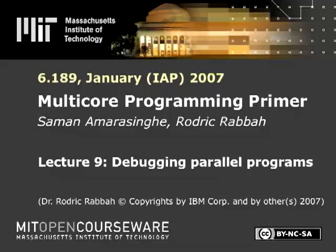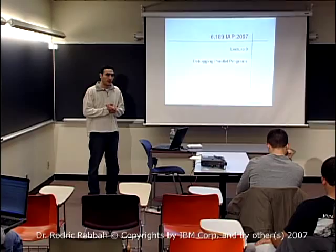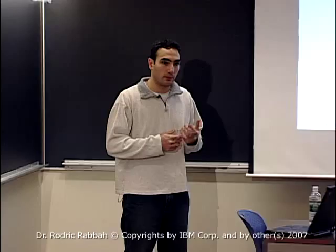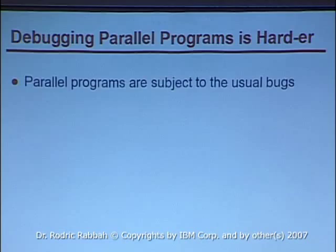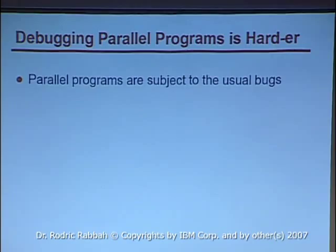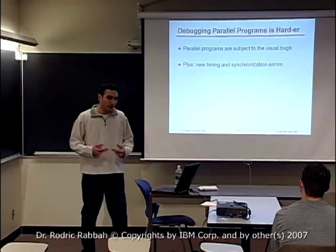Yesterday in recitation we talked about how to debug programs on Cell. Today I'm going to talk a bit more about debugging parallel programs in general and give you some common tips that might be helpful in tracking down problems. Debugging parallel programs is harder than normal sequential programs. Sequential programs have the traditional set of bugs, and parallel programs inherit those.